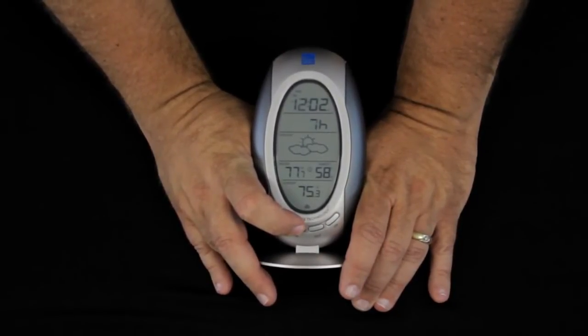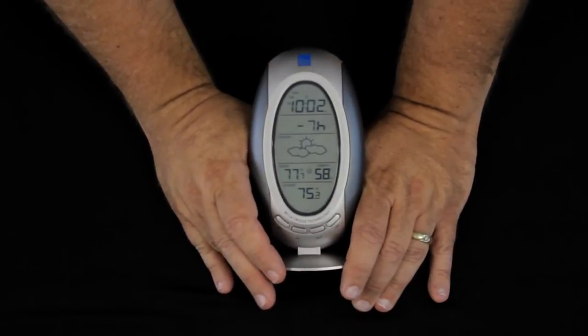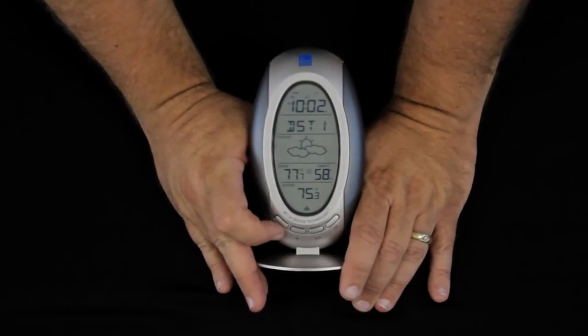The American time zones: minus five for the east coast, minus six for central time, minus seven mountain time, minus eight is Pacific time. We'll leave this in mountain time. Press our set button again.